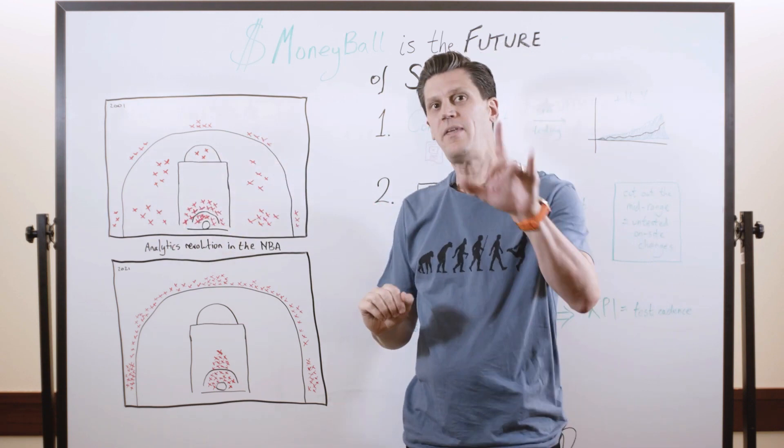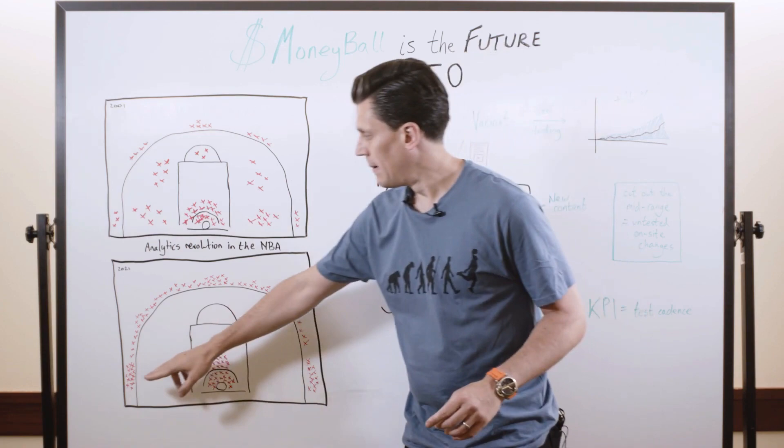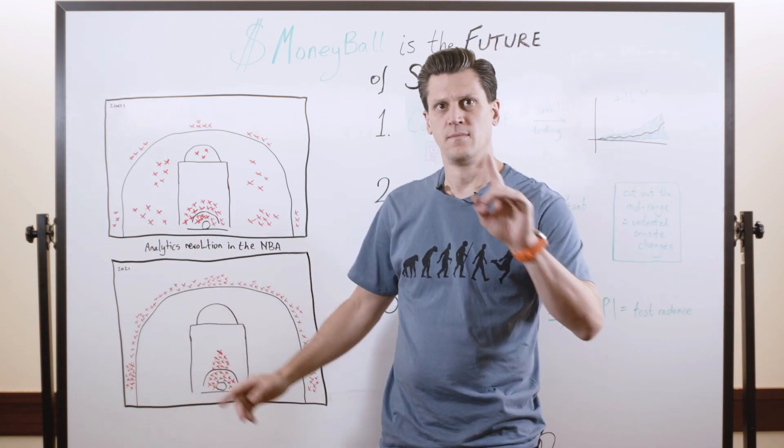Something happened in the subsequent 20 years, because today the shot chart looks more like this. It's pretty mind-blowing. You can see there's still a ton of dunks and layups, still a ton of three-point shots, but the mid-range has all but disappeared. Why is that?